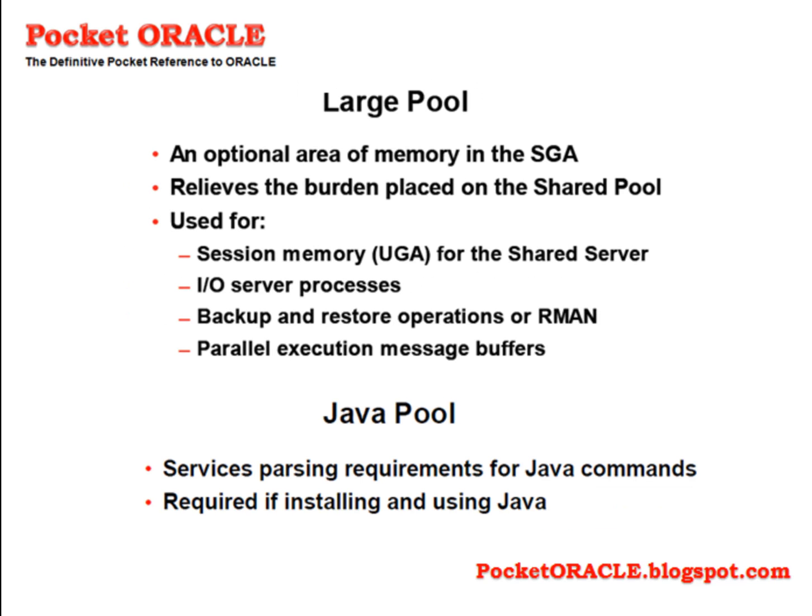The large pool is an optional area that, if created, will be used automatically by various processes that would otherwise take memory from the shared pool. It is used for session memory, the UGA for the shared server, I/O server processes, backup and restore operations (RMAN), and parallel execution message buffers.